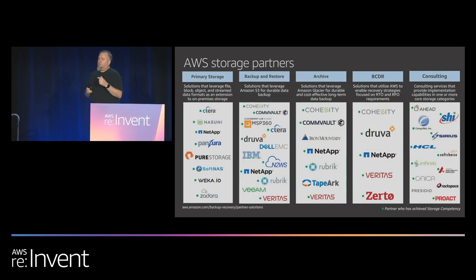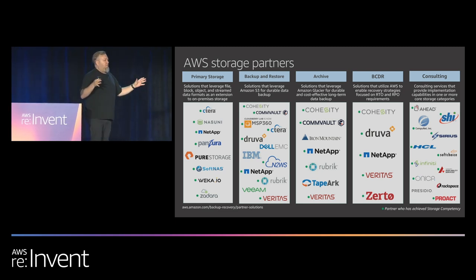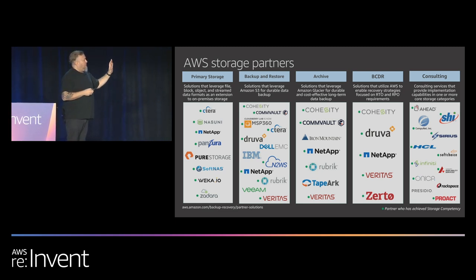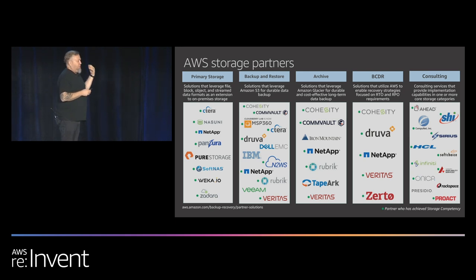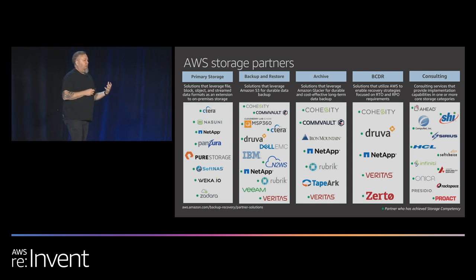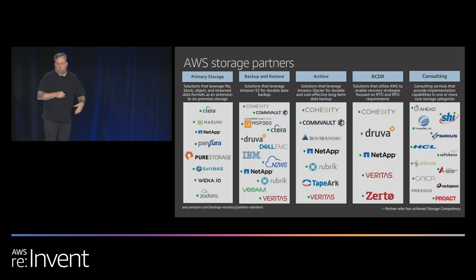We also have a lot of partners. This slide shows the broader storage partner ecosystem — on the far right are consulting partners who can help you do the work, plan the migration, and execute it. The other companies have built tools with AWS integrations that can solve problems across business continuance, backup, migration, and primary storage. All of this is available on the AWS website.